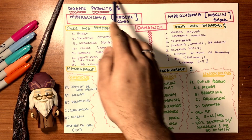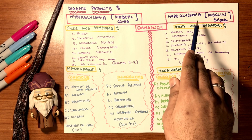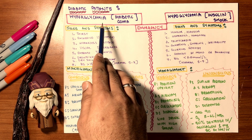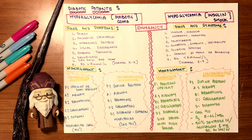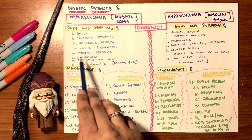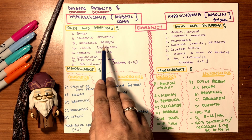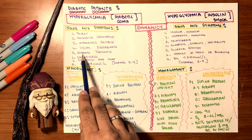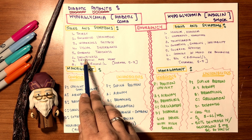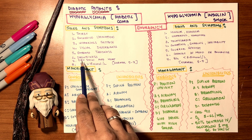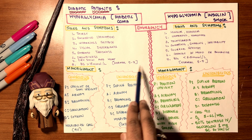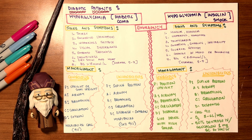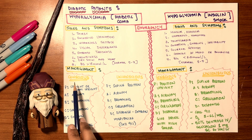Diabetic patients can be hyperglycemic or hypoglycemic. Hyperglycemia — increase in blood sugar levels — can lead to diabetic coma. Signs and symptoms include: excessive thirst, excessive urination, weakness and fatigue, visual disturbances or blurry vision, tiredness, drowsiness, dry skin with heat production from the skin, and abnormal blood glucose values.